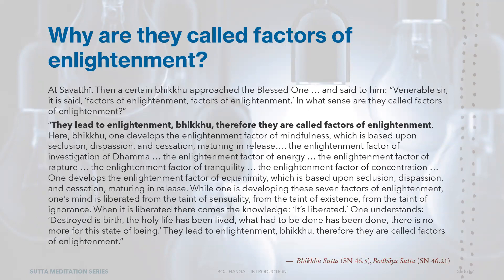Why are they called factors of enlightenment? The Pali word Bojhanga is derived from Bodhi and Anga. Bodhi can be translated as enlightenment, awakening, or knowledge or wisdom of the Buddha. Anga can be translated as a constituent part or a factor. So we translate Bojhanga as 'factor of enlightenment,' 'factor of awakening,' or 'factor of the knowledge or wisdom of the Buddha.' In the Bhikkhu Sutta, a certain bhikkhu asked the Blessed One: 'In what sense are they called factors of enlightenment?' And the Buddha answered: 'They lead to enlightenment, Bhikkhu — therefore they are called factors of enlightenment.' In Pali: Bodhaya sambhatantiti, Koviku, Tasmā, Bojangati, Vuchanti.